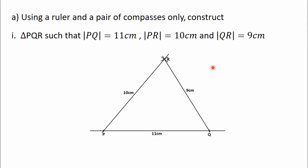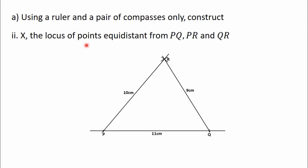The next part says we should construct X, the locus of points equidistant from PQ, PR, and QR. The locus of points equidistant from these three lines will be the point of intersection of the bisectors of the angles formed at point P, point Q, and point R. So to get X, we are going to bisect the angle formed at point P, bisect the angle formed at point Q, and bisect the angle formed at point R. Those three bisectors will intersect at a point, and their point of intersection will give us X.